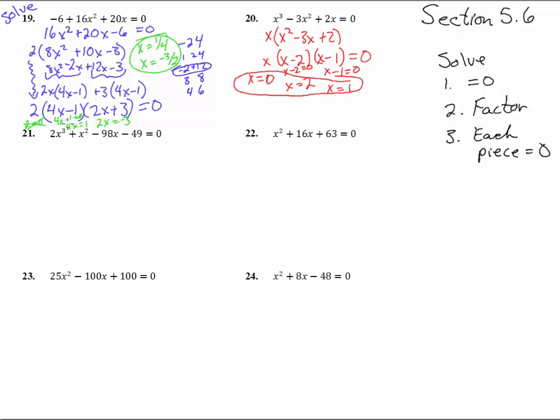Number 21. Can we pull out a greatest common factor? Nope. But we can, there are four of them. So we can just go straight to grouping. Pull out an x² out of there and we get 2x plus 1. Over here we can pull out a negative 49 and we're left with 2x plus 1. That gives us x² minus 49 times this 2x plus 1.